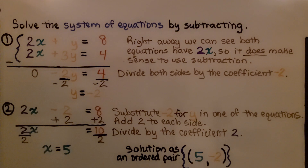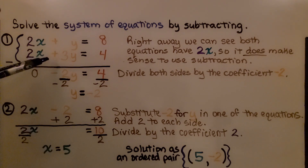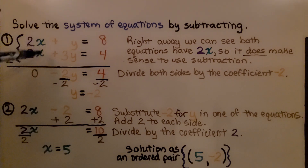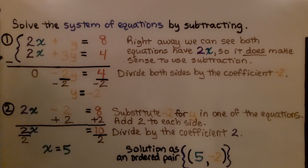We're told to solve the system of equations by subtracting. We have 2x plus y equals 8 and 2x plus 3y equals 4. Right away we can see both equations have 2x, so it makes sense to use subtraction. Remember, when they have the same variable term, that's when we use subtraction.